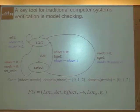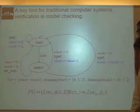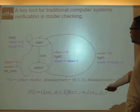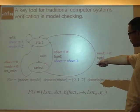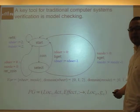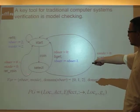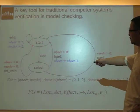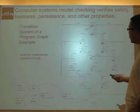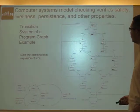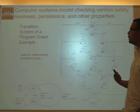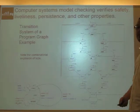A key tool for traditional computer systems verification is model checking. Usually we use automata to describe the logic of computer systems. We use states to describe the discrete states of the computer, and we use edges to describe the discrete events that trigger the transformation of the state of a computer system. We can then use this automata to do model checking to verify the safety, liveness, persistence, and other preferable properties of your software and hardware system.